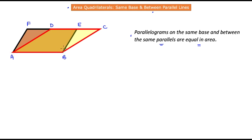We are going to divide each parallelogram into sections so we can identify what is common and what is not common between the two. In the diagram, triangle one is bounded between lines AD and F. The second area is the region bounded by A, B, E, and D — a trapezium. The third area is triangle BCE.